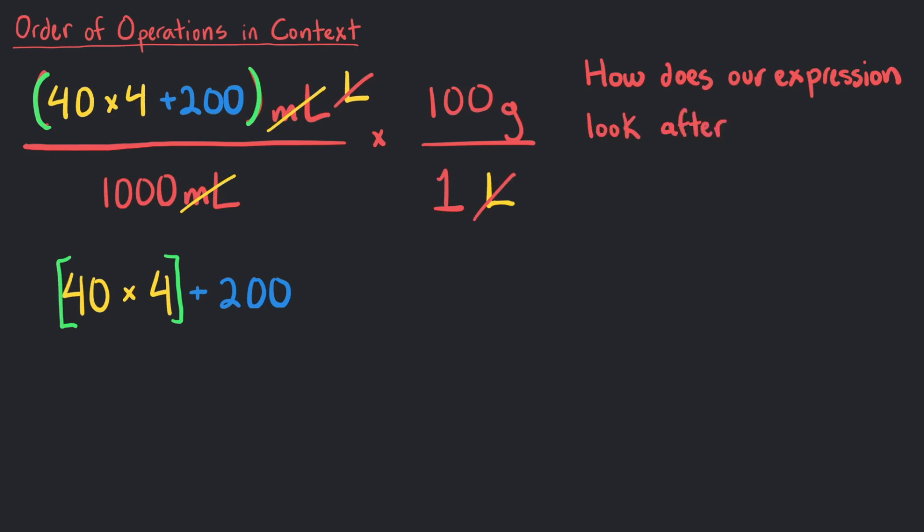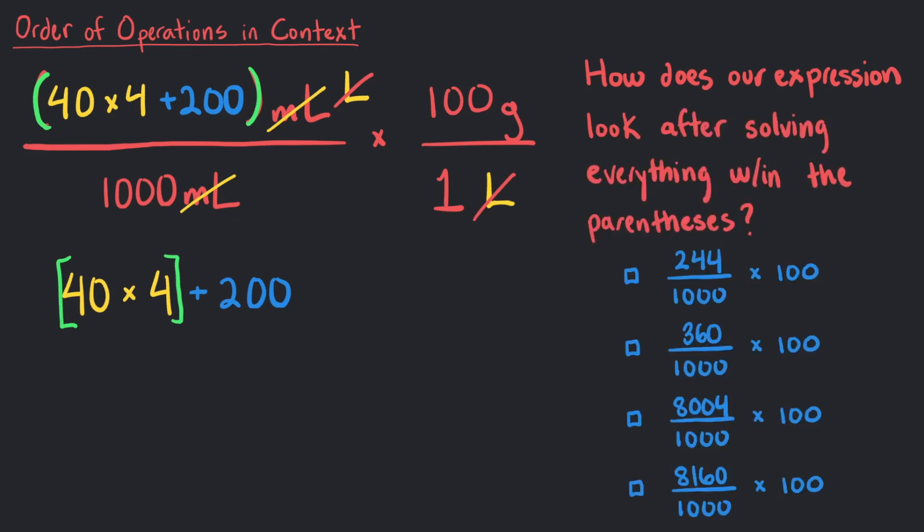How does our expression look after solving everything within the parentheses? Yes, 40 times 4 plus 200 is 360. But what does this number mean again? This is 360 milliliters of lemonade.